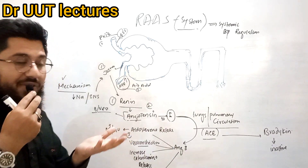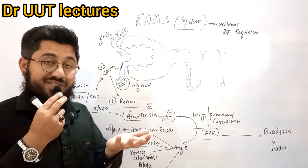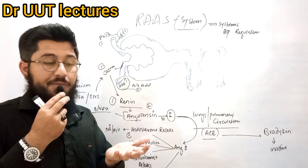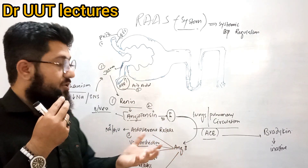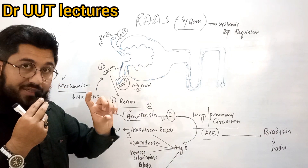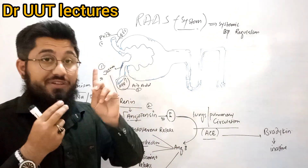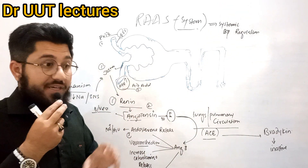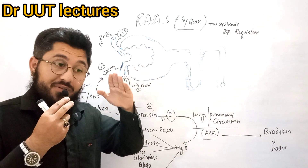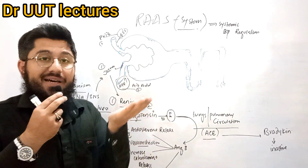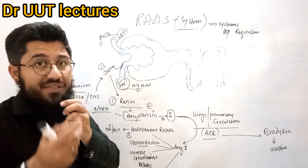So now, because of angiotensin 2 triggering aldosterone, that sodium which was deficient is reabsorbed back. Water is also increased, sodium is increased, and blood volume rises. Additionally, angiotensin 2 performs another very interesting job — vasoconstriction, constricting the blood vessels.